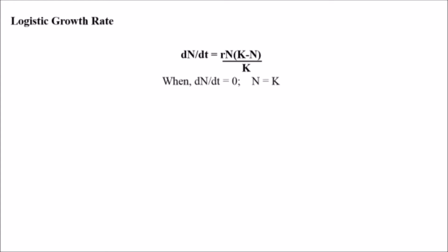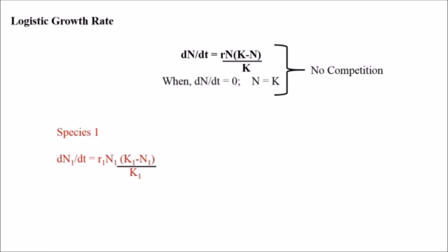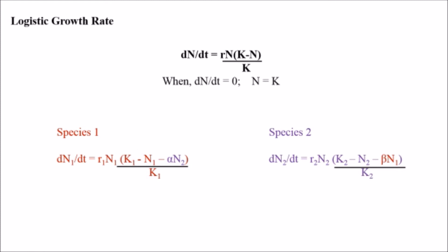When there are two species in competition — species one and species two — in the absence of competition they will simply follow the logistic growth rate. But when there is competition, the growth rate of species one will be influenced by the number of species two by the alpha factor, and species two will be affected by species one by the beta factor.